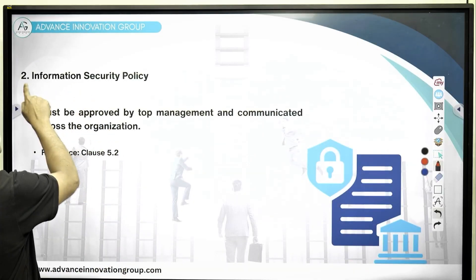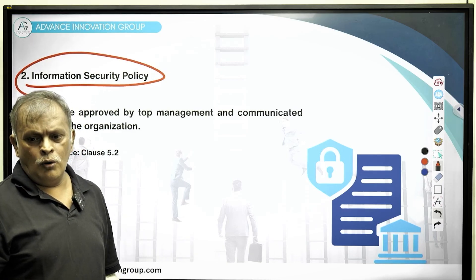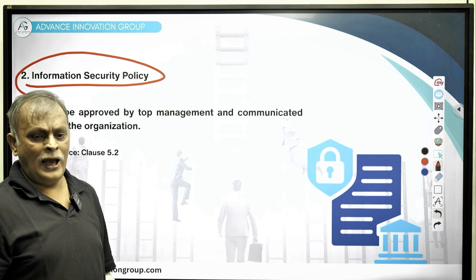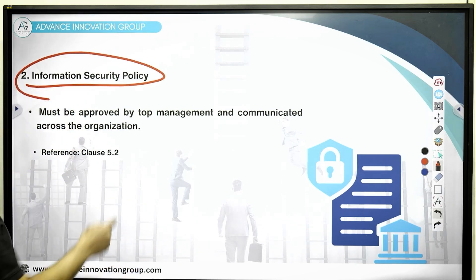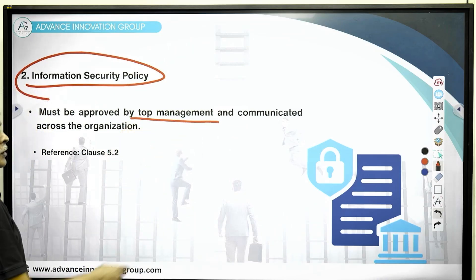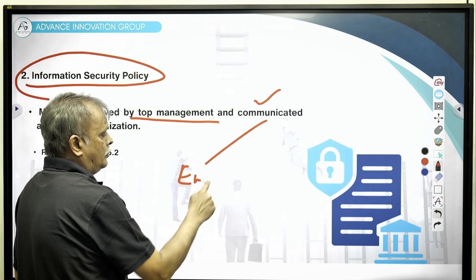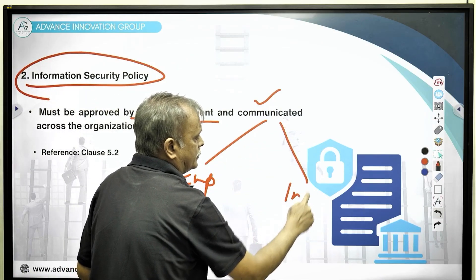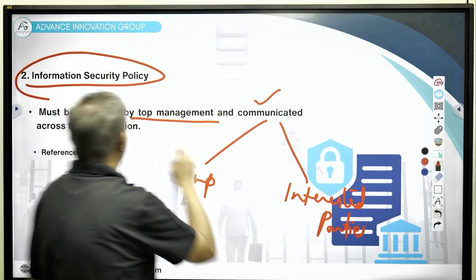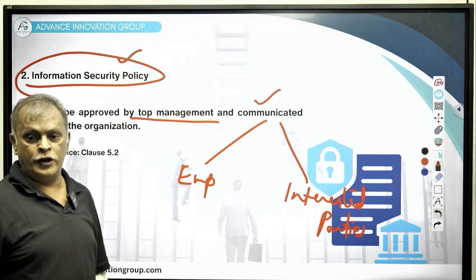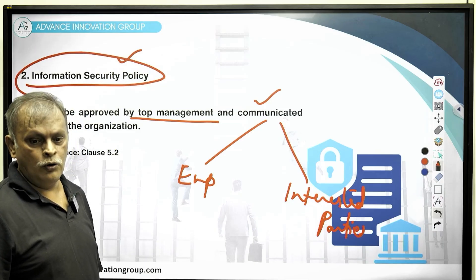Document number two is the information security policy. You will realize that all ISO standards are very rigid about having a policy in place and that policy being communicated — both that it is approved by management and that it is communicated to your employees and to your other interested parties. Your information security policy is yet another crucial document that the ISO auditor will keenly look for.